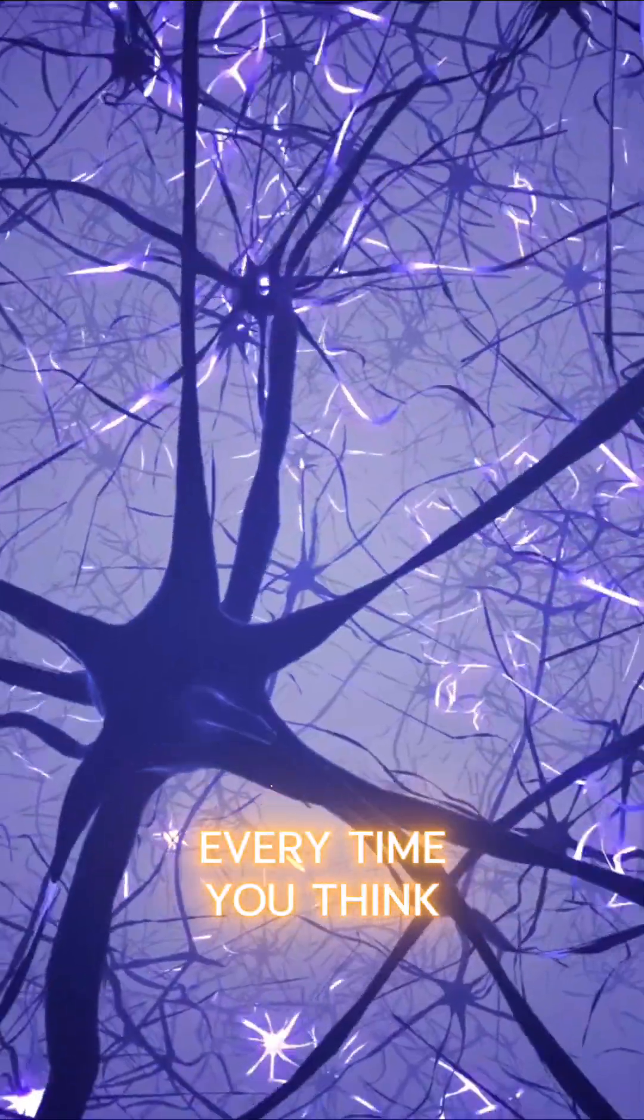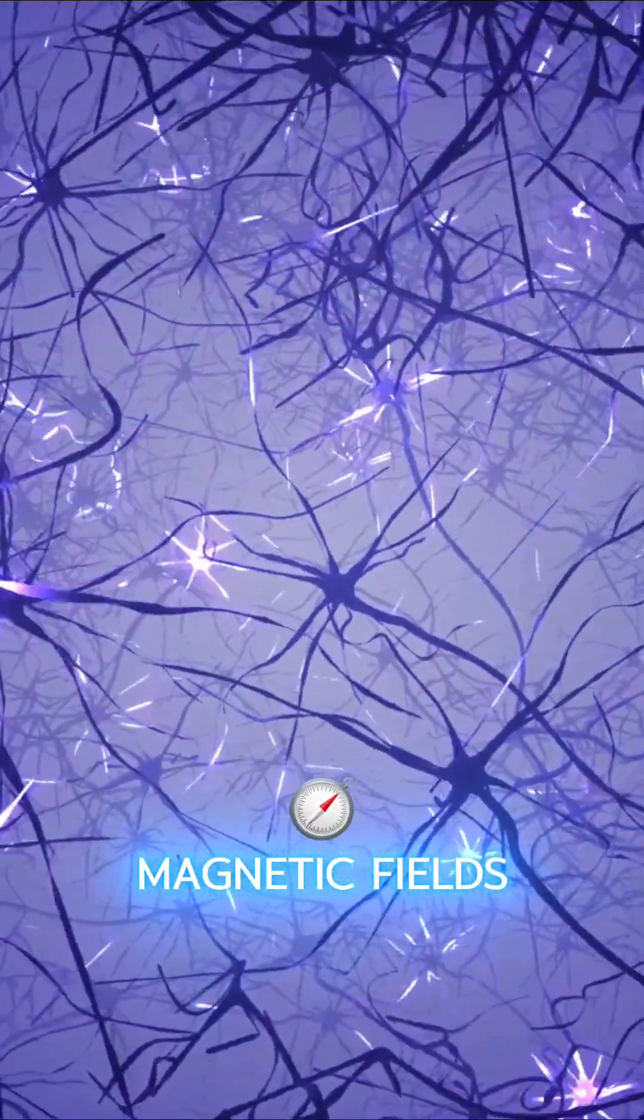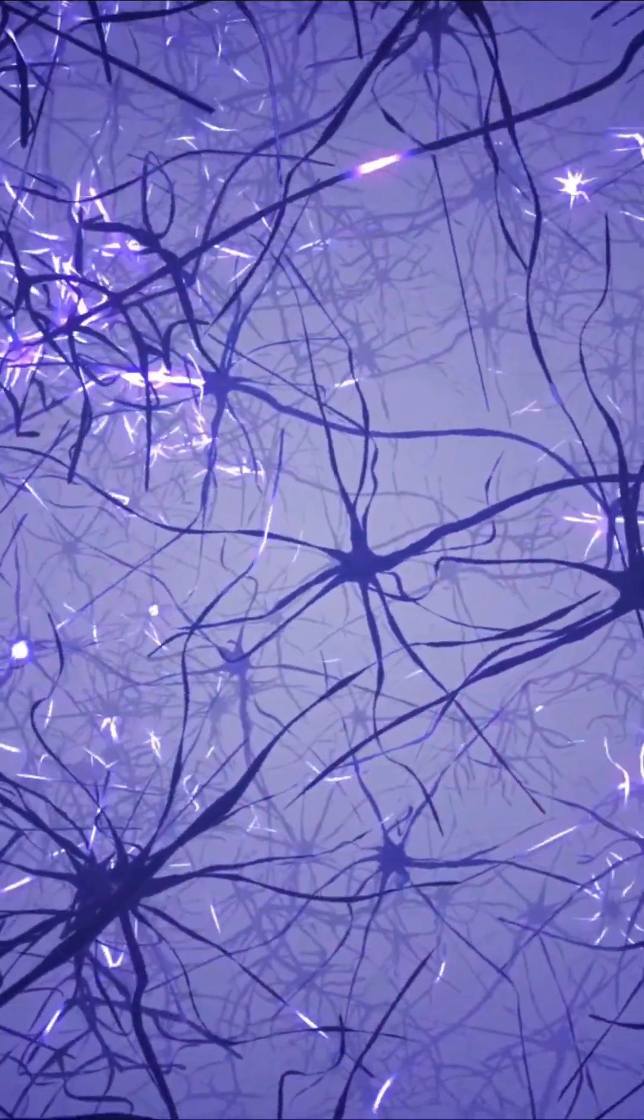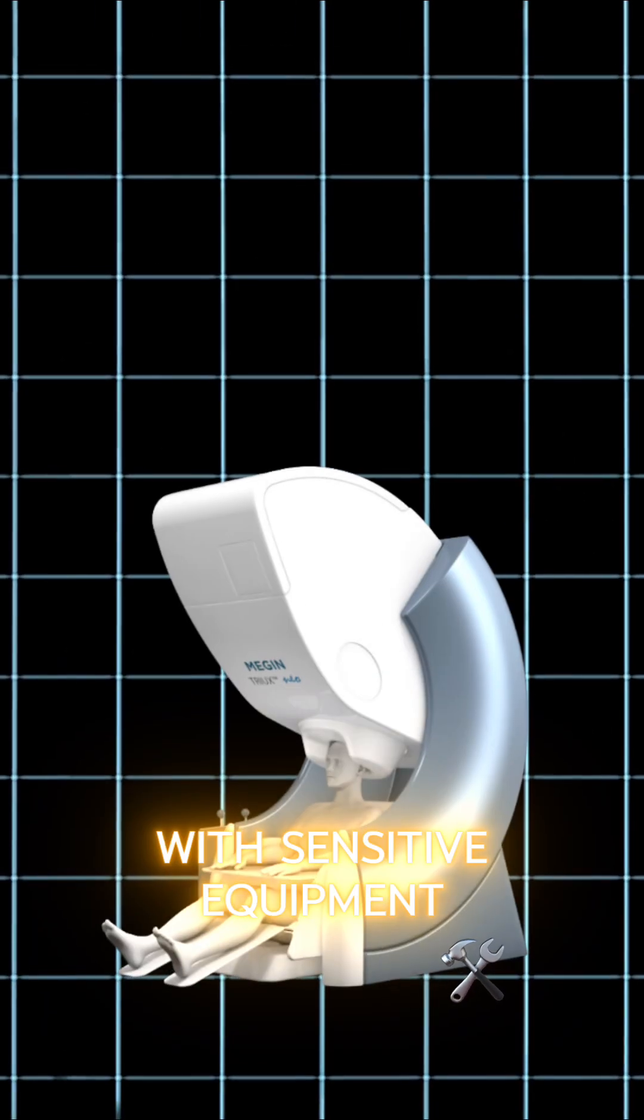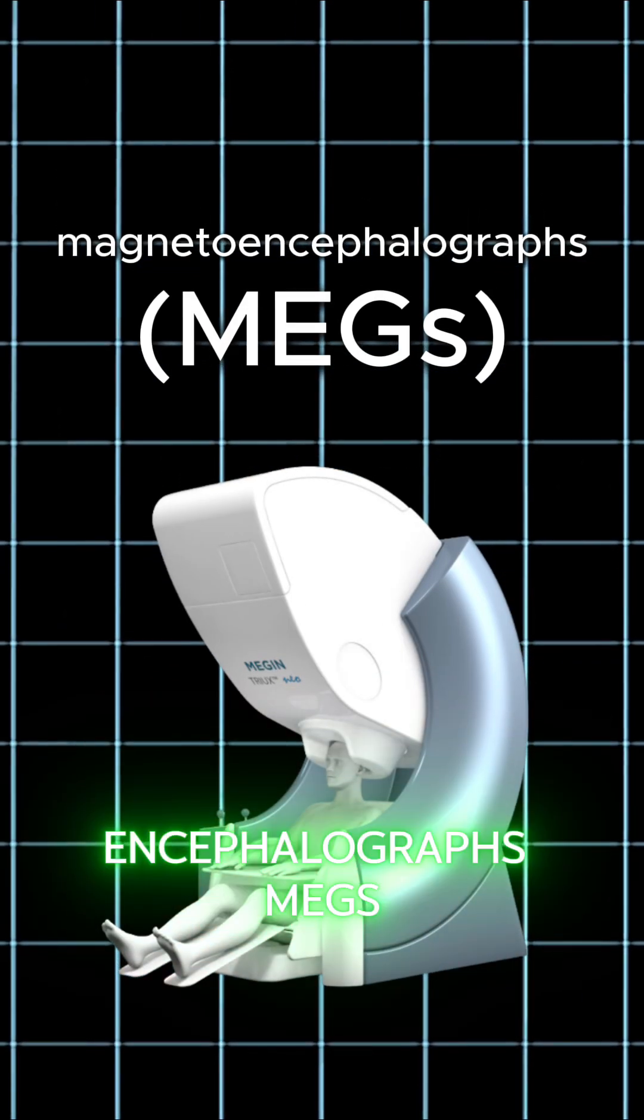Every time you think, your brain produces tiny magnetic fields. Although extremely weak, they can be detected with sensitive equipment such as magnetoencephalographs, megs.